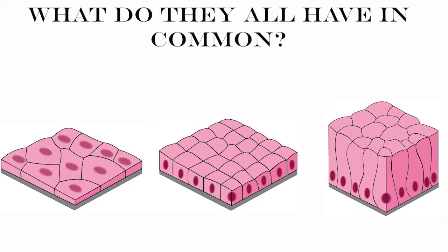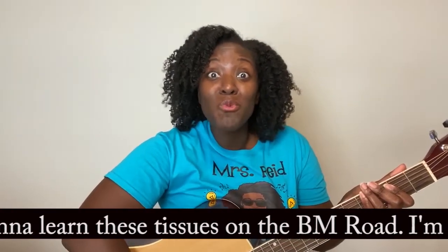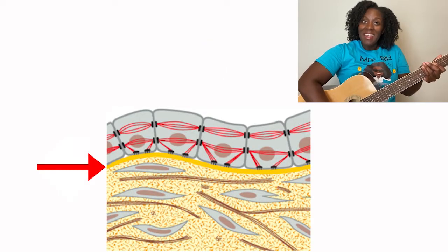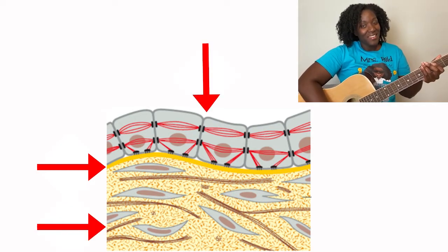Let's start with epithelium. Look at these three pictures. What do all three have in common? The two main things are that they both have cells on top of a thin sheet called the basement membrane. All tissue cells sit on top of the basement membrane, and the basement membrane is the connector between the cells on top and the connective tissue underneath.